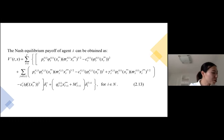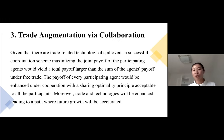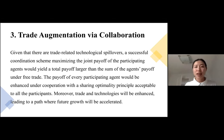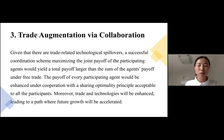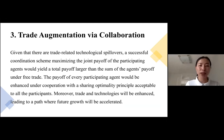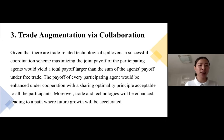Let's move to section 3, about the trade augmentation by collaboration. A successful coordination scheme maximizing the joint payoff of the participating agents would yield a total payoff larger than the sum of the agents' payoffs under free trade. The payoff of every participating agent would be enhanced under cooperation. We are sharing automatic principles acceptable to all the participants. Moreover, trade and technology would be enhanced, leading to a path where future growth will be accelerated.